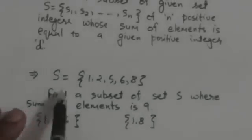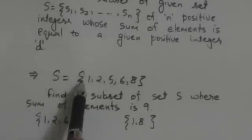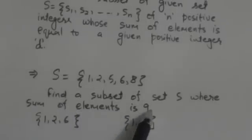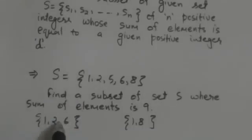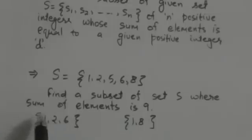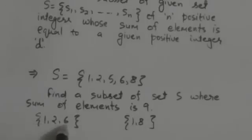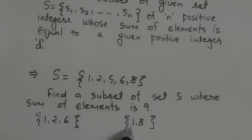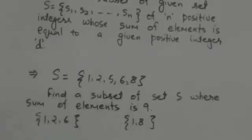For example, consider this set S. We have to find a subset of set S whose sum of elements is 9. In this case there are two solutions, because there are two subsets whose sum of elements is 9. The elements 1, 2, 6 sum to 9, and the elements 1 and 8 also sum to 9. So there are two solutions to this problem.